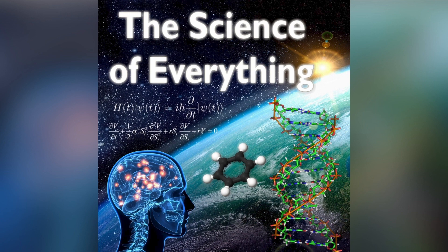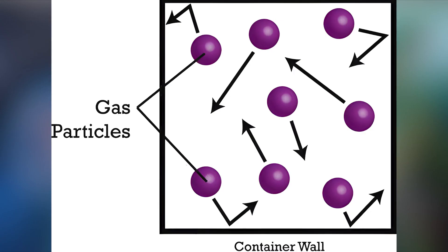First of all, we'll talk about the properties of gases and what we mean when we say gas. Gas is one of the fundamental states of matter, along with liquid and solid and plasma and some other more exotic ones as well. Gases consist of tiny particles, and in gases the particles are widely spaced — there's a lot of empty space in between them. When we say empty space, we don't mean air, because air is itself a gas composed of tiny particles with lots of space in between them. That space is essentially vacuum — there's literally nothing there.